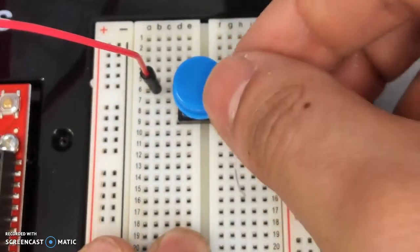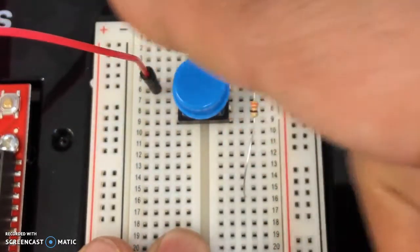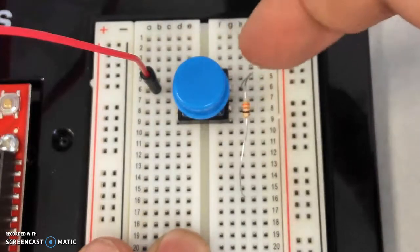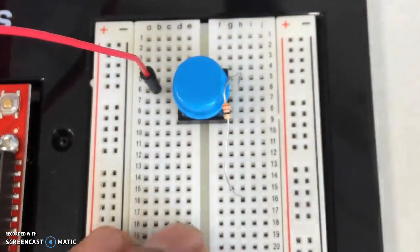So far we have 5 volts going to the top part of the resistor, going through the resistor into an LED.